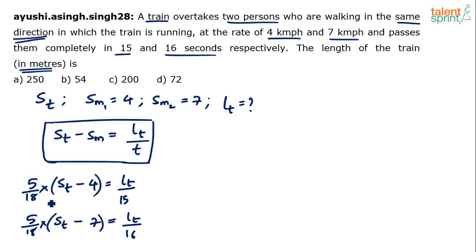Left hand side is speed in metres per second. Right hand side is distance by time, again in metres and seconds.